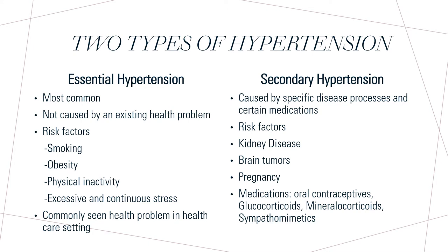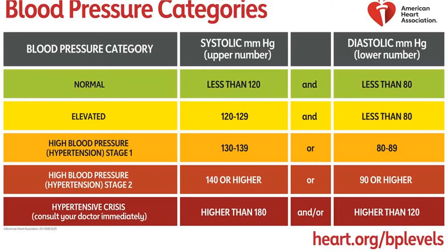Secondary hypertension, on the other hand, is caused by specific disease processes and certain medications. Kidney disease, brain tumors, pregnancy, and medications including oral contraceptives, glucocorticoids, and others are some of the risk factors for secondary hypertension. Treating the disease process or ceasing or switching medications that do not affect blood pressure will treat secondary hypertension. This chart is from the American Heart Association.